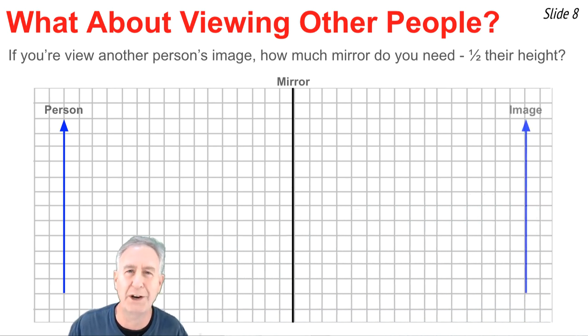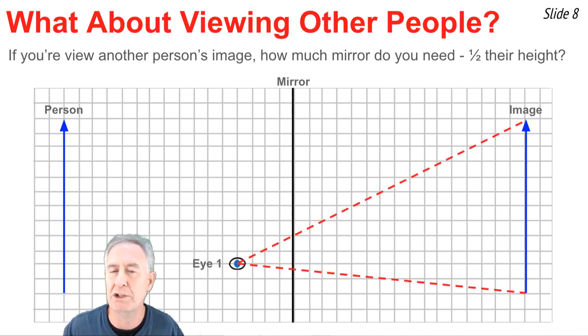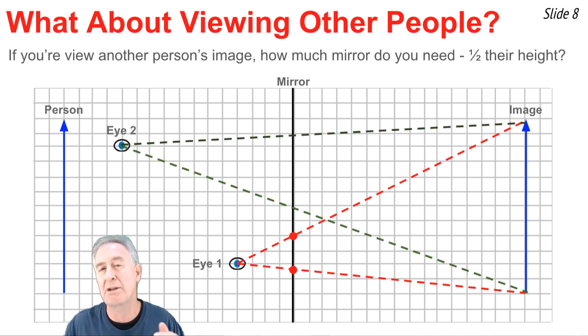So here's our person and here's our image and then here's our eye. You'll notice this time the eye is not on the person because the eye is viewing a different person. So now we draw lines of sight to the top-most and bottom-most extreme of that object and we locate where along the mirror this person is sighting to view another person's image and we count about two squares. Now we're going to move the person to another location further away from the mirror and we'll repeat the process